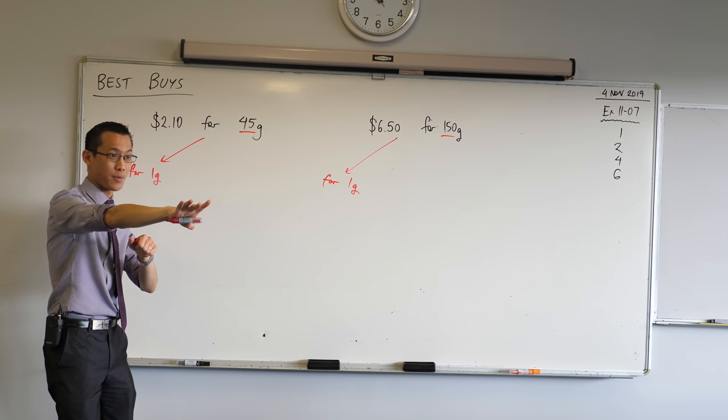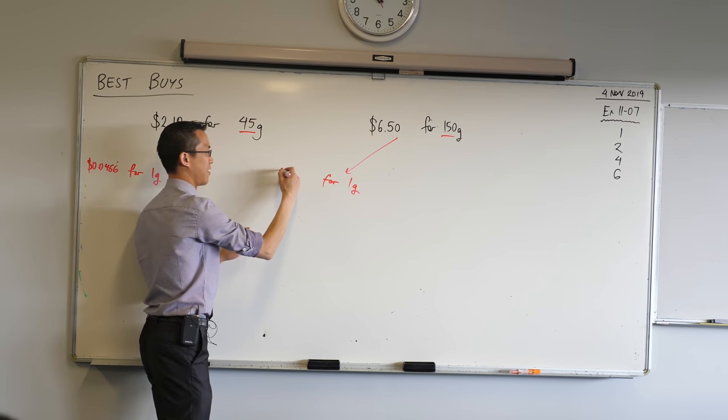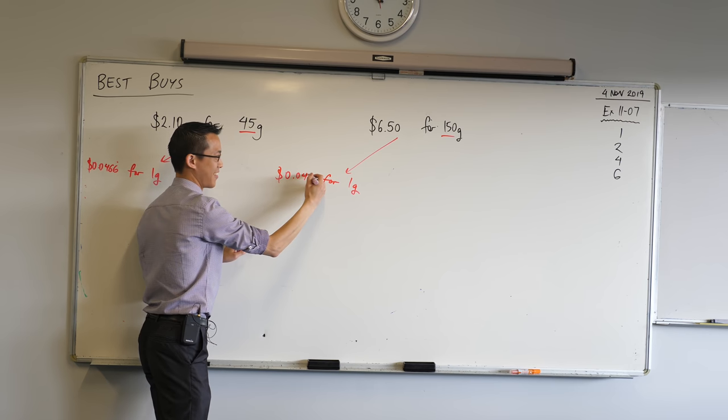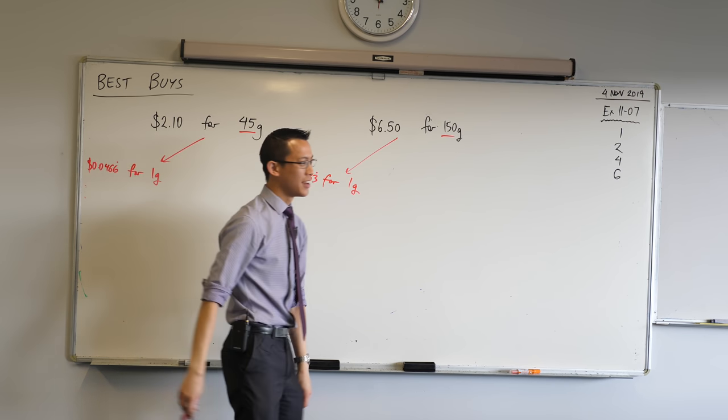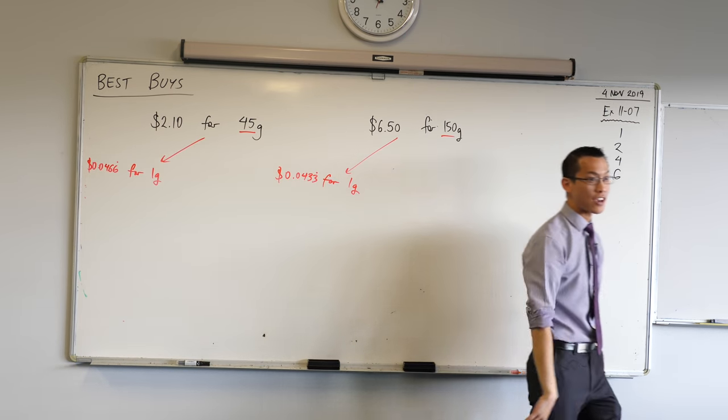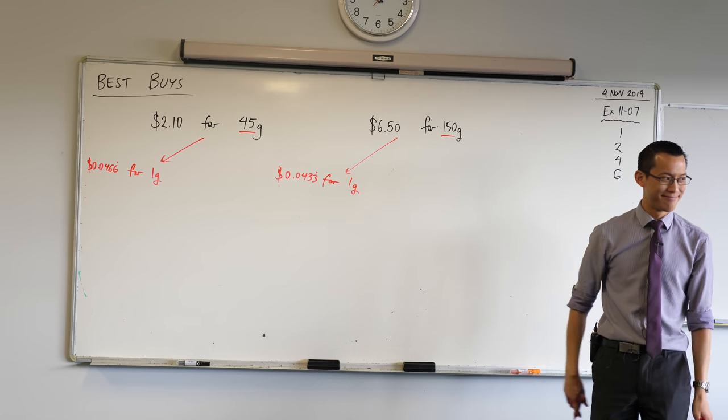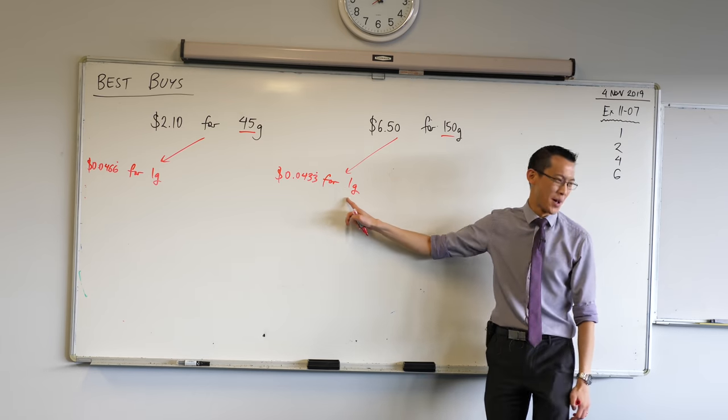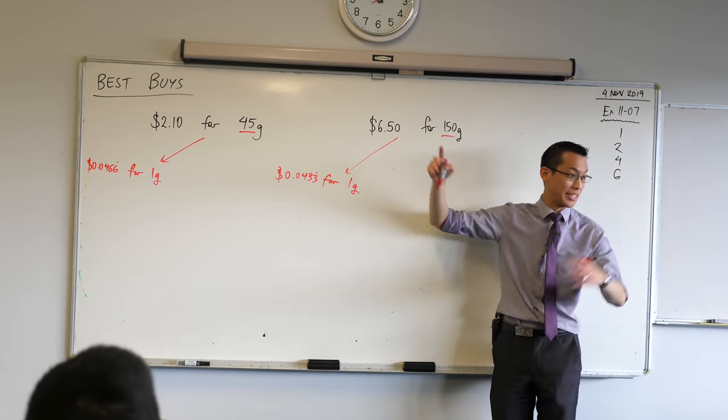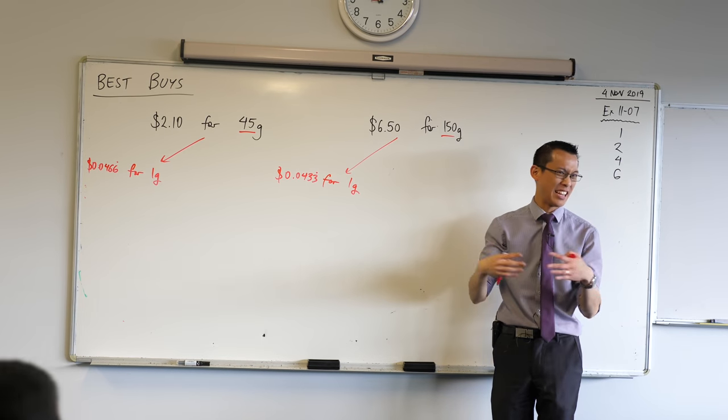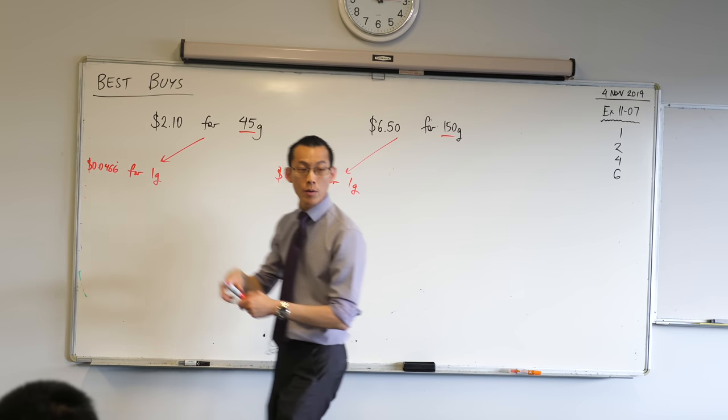That's right. We're happy with that. So we can quickly see which one is actually cheaper. It's the bigger one per mass, right? Of course it costs more to get more, but you're actually getting more for your value. Now this way works. It's fine.